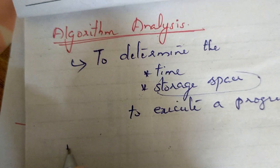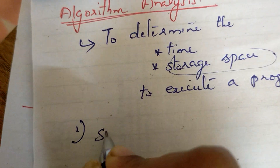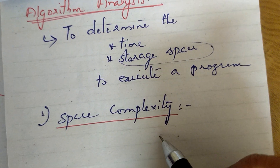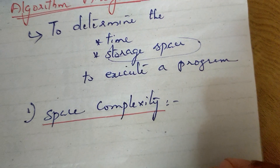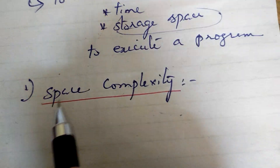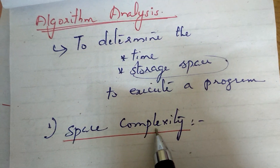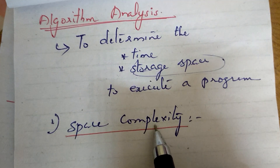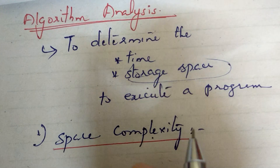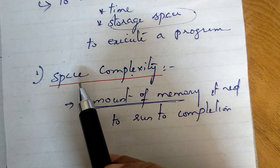When we say complexity, we have two types of complexity: space and time. First is space complexity. Space complexity is the amount of memory space required to run and complete a program.